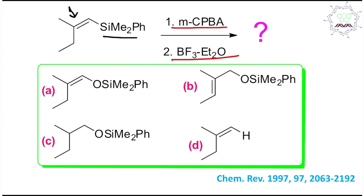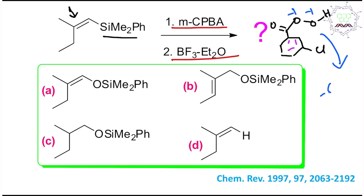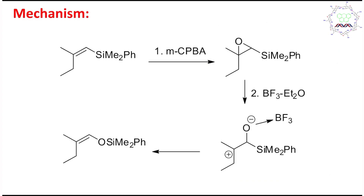Now if you look at MCPBA, this is meta-chloroperoxybenzoic acid — this is the Cl and this is the peracid part of MCPBA. These two oxygens are very electron deficient because they are in minus one oxidation state; they prefer to get reduced to minus two oxidation state, so they oxidize something. Now which one is most easily oxidized? Silicon or alkene? Obviously the alkene pi bond, because alkene has a pi bond formed by the sidewise overlap of p orbitals, meaning the electron cloud is loosely held by the two carbon atoms. So oxidation will happen on this double bond.